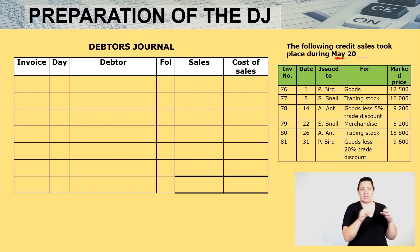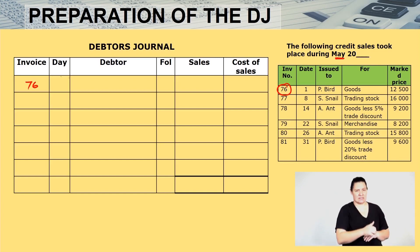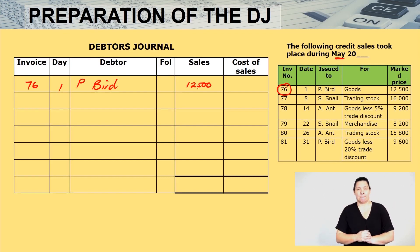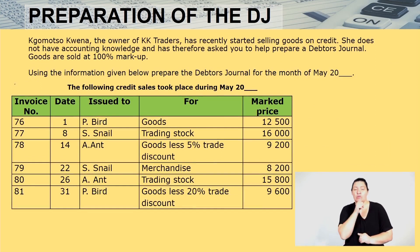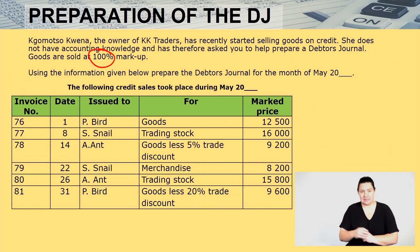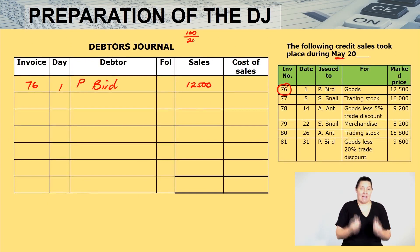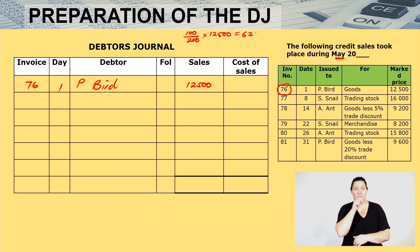Invoice number 76 is the first one. The day is the 1st and the debtor is P. Byrd. We sold goods to him for 12,500. It is very important — goods are sold at a markup of 100%. That simply means when you want to get your cost of sales, you are saying what you want is 100, what you have is 200, multiplied by 12,500, which gives you 6,250.